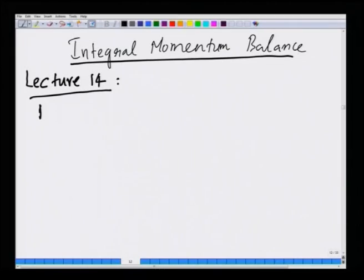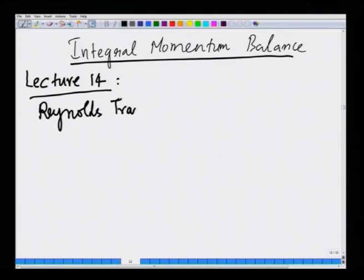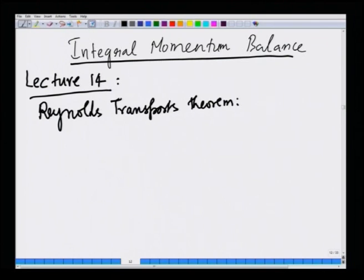The starting point of all this was the Reynolds transport theorem. The Reynolds transport theorem relates the time derivative of a quantity like mass, momentum, or energy for a system to the time derivative of those same quantities for a control volume. A system corresponds to a fixed or identifiable piece of mass, whereas a control volume is a stationary piece of volume that you have constructed artificially to describe or analyze a problem.